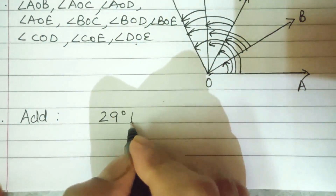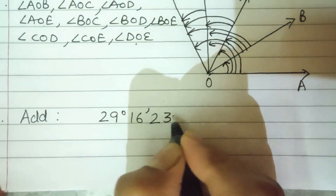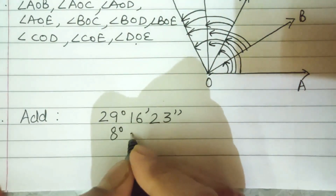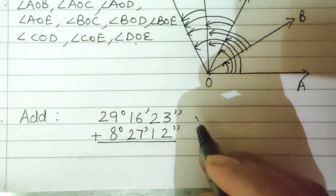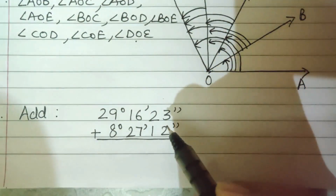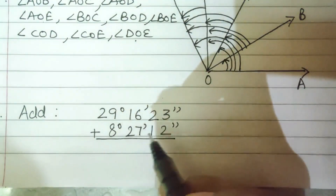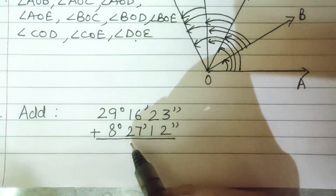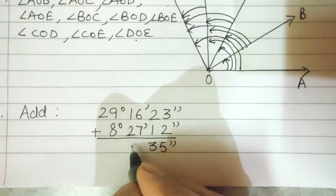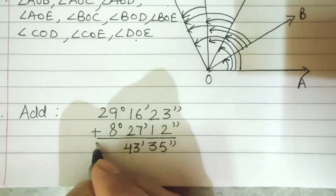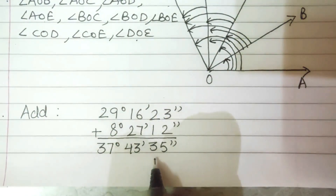Sum number four: add 29 degrees 16 minutes 23 seconds to 8 degrees 27 minutes 12 seconds. When adding, we add seconds to seconds, minutes to minutes, and degrees to degrees. We cannot carry over from seconds to minutes, or from minutes to degrees. So 23 plus 12 is 35, 43 minutes, 37 degrees. Our answer is 37 degrees 43 minutes 35 seconds.